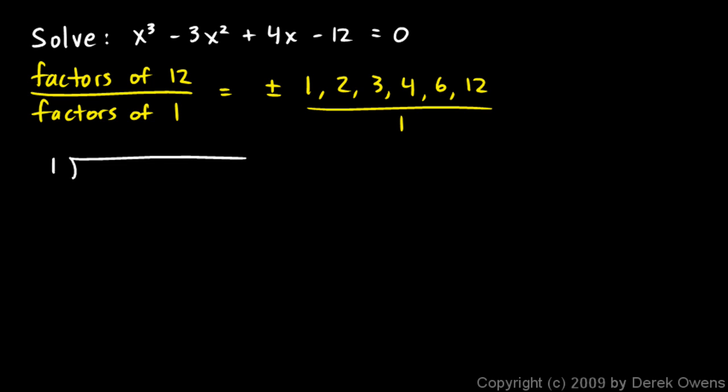So we'll try 1 and let's write down the coefficients: 1, negative 3, 4, negative 12. So bring down the 1. 1 times 1 is 1. We add, we get negative 2. Negative 2 times 1 is negative 2. We add and we get 2. 2 times 1 is 2. We get negative 10. So that didn't work.